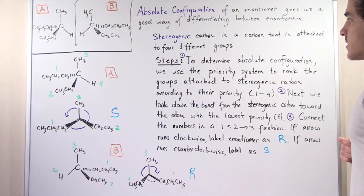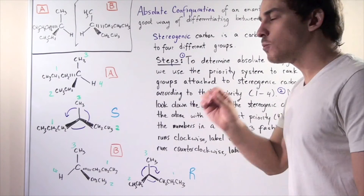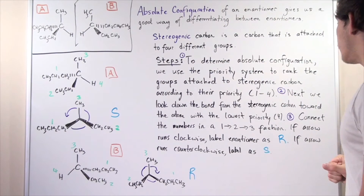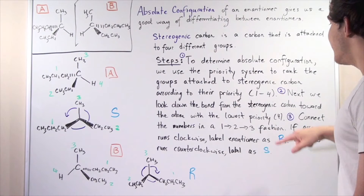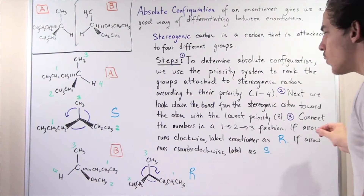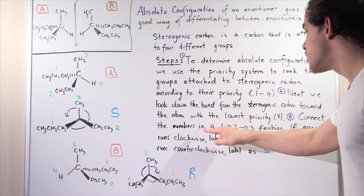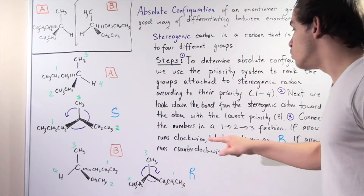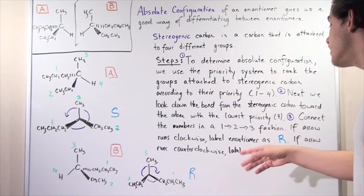Now we have to follow three important steps to determine our absolute configuration. Step one: we use the Cahn-Ingold-Prelog priority system to rank the groups attached to our stereogenic carbon according to their priority, where four is the lowest priority and one is the highest. Step two: we look down the bond from the stereogenic carbon toward the atom with the lowest priority, priority number four. Step three: we connect the numbers in a one, two, three fashion by drawing an arrow. If the arrow runs clockwise, we label the enantiomer R. If counterclockwise, we label it S.